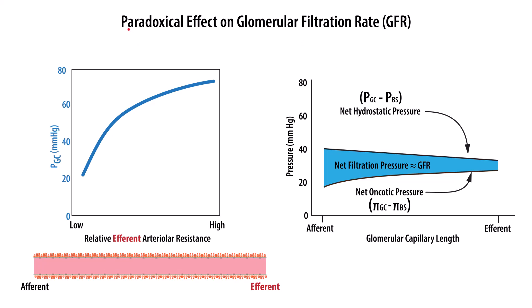With the paradoxical effect, the focus is on the changes in efferent arteriole resistance and how they affect the hydrostatic pressure inside the glomerular capillary. We see here from low to high resistance: at low resistance we have a low hydrostatic pressure, and at high resistance we have a high hydrostatic pressure. With resistance, we're talking about vasoconstriction.